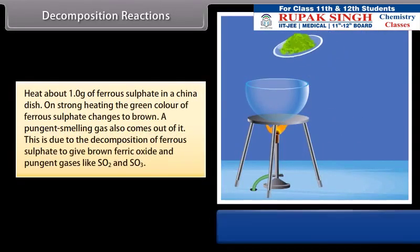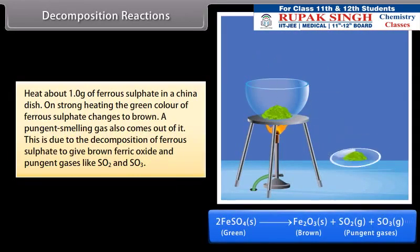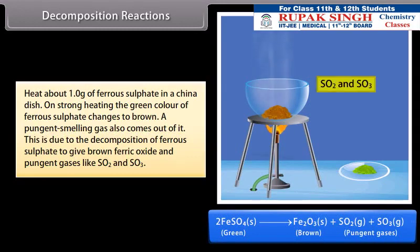Activity: Heat about 1.0 gram of ferrous sulfate in a china dish. On strong heating, the green color of ferrous sulfate changes to brown. A pungent smelling gas also comes out of it. This is due to the decomposition of ferrous sulfate to give brown ferric oxide and pungent gases like SO2 and SO3.